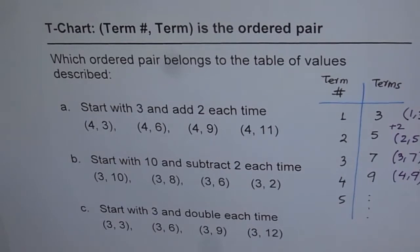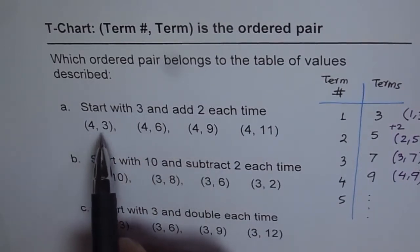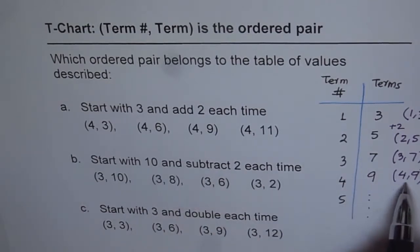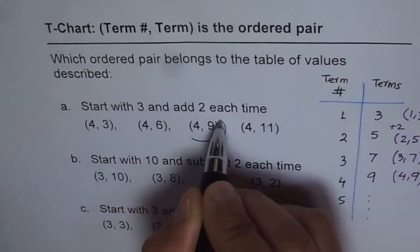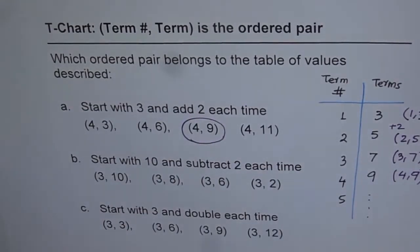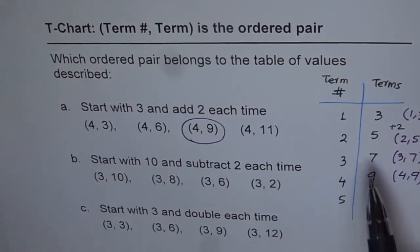Now the choices given to us are (4, 3), (4, 6), (4, 9), (4, 11). So we find that the fourth one actually is (4, 9). So this is the correct answer. That is how you have to get your answer. Do the next two yourself. So make your t-chart and then find the answer.